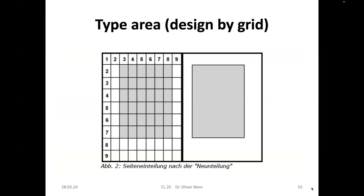Another important concept is the type area — like the playing field in soccer, there is a defined area where you are allowed to play and you shouldn't go outside it. This is mostly a grid definition: you have a certain number of columns, and within the gray grid area you are allowed to place text and images. In this case, the example uses a six-by-six grid.